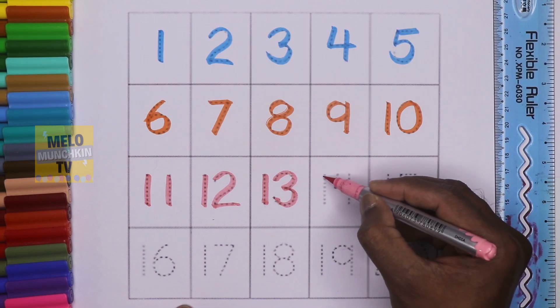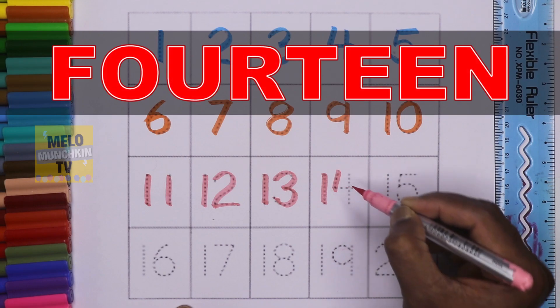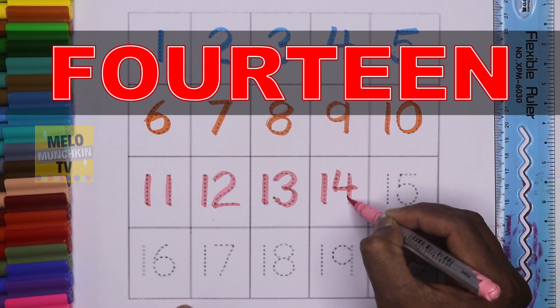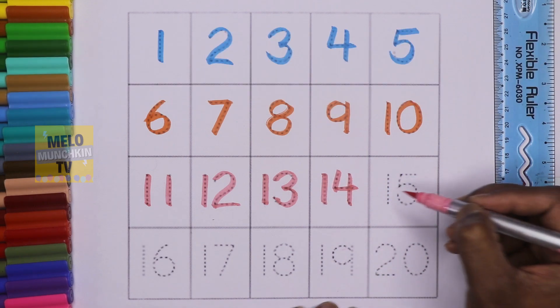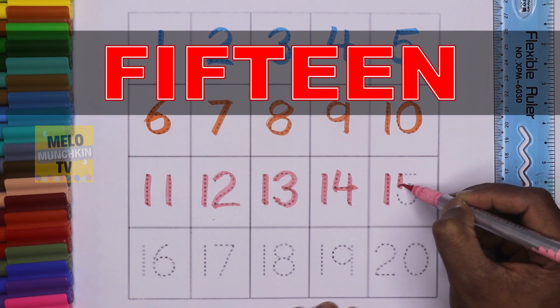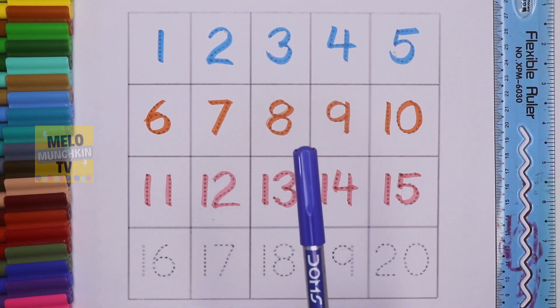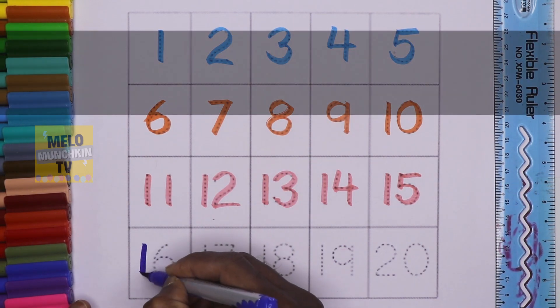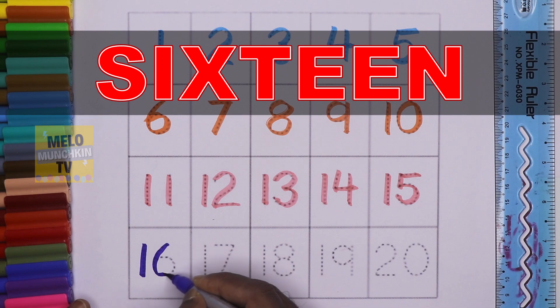This is number 14, F-O-U-R-T-E-E-N, 14. This is number 15, F-I-F-T-E-E-N, 15. Dark blue color. This is number 16, S-I-X-T-E-E-N, 16.